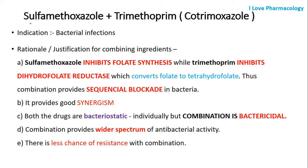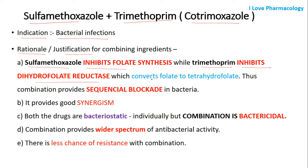Coming to the second FDC: sulfamethoxazole and trimethoprim, also called cotrimoxazole. They are indicated mainly in the treatment of bacterial infections. The rationale for combining these two drugs: sulfamethoxazole inhibits folate synthesis, whereas trimethoprim inhibits dihydrofolate reductase, which is required for converting folate to tetrahydrofolate. This combination provides a sequential blockade — cotrimoxazole is the classic example for sequential blockade in bacteria.